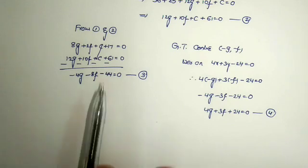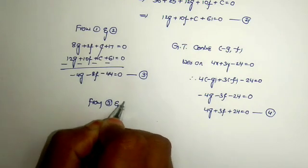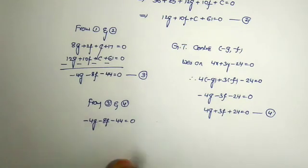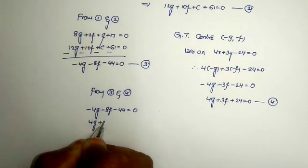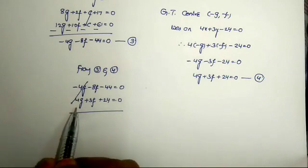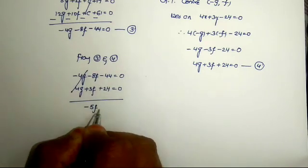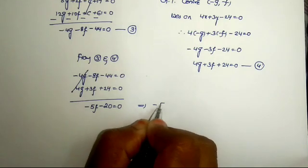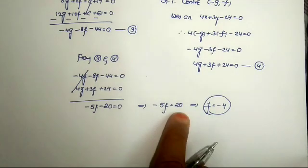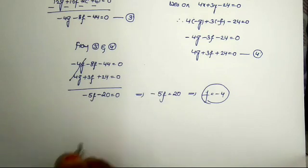Now solving Equations 3 and 4 to find the values of g and f. Equation 3: -4g - 8f - 44 = 0; Equation 4: 4g + 3f + 24 = 0. Adding them, the -4g and +4g cancel. We get -8f + 3f = -5f, and -44 + 24 = -20. So -5f = -20, but wait, -5f = 20, therefore f = -4.